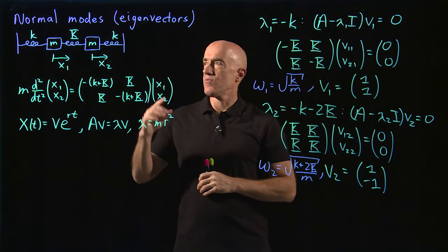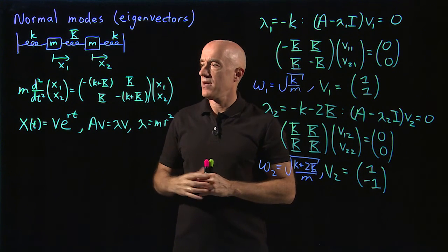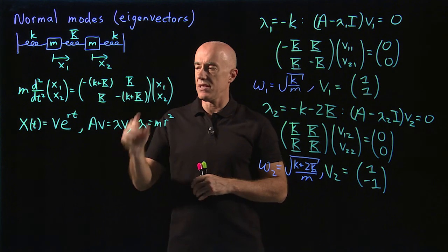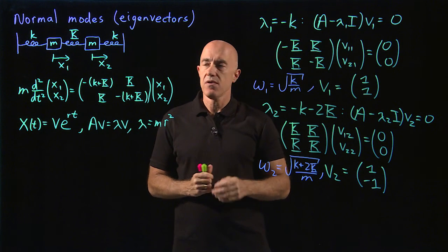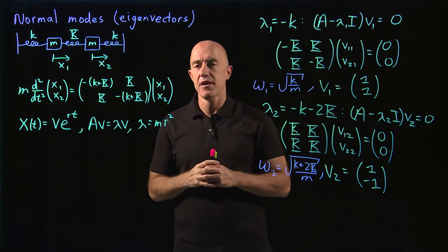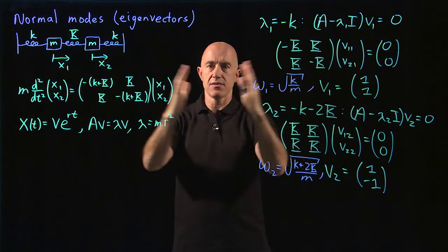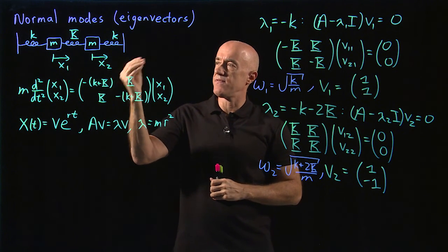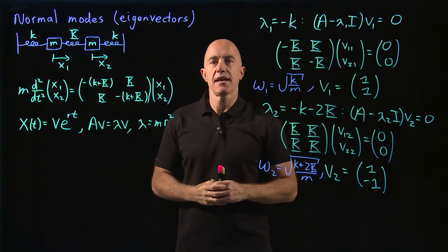To summarize: we solved the normal mode problem of two masses connected to two walls and to each other by springs. We wrote that as a matrix equation, then by our ansatz converted it to a linear algebra eigenvalue problem. By computing the eigenvalues and eigenvectors, we discovered that what looked like complicated motion is actually just a linear superposition of two simpler motions — one when the masses move together left and right, and one when they move opposite each other. I hope you see the power of mathematics to understand a physical problem that on first glance looks quite complicated. I'm Jeff Chasnoff, thanks for watching, and I'll see you in the next video.